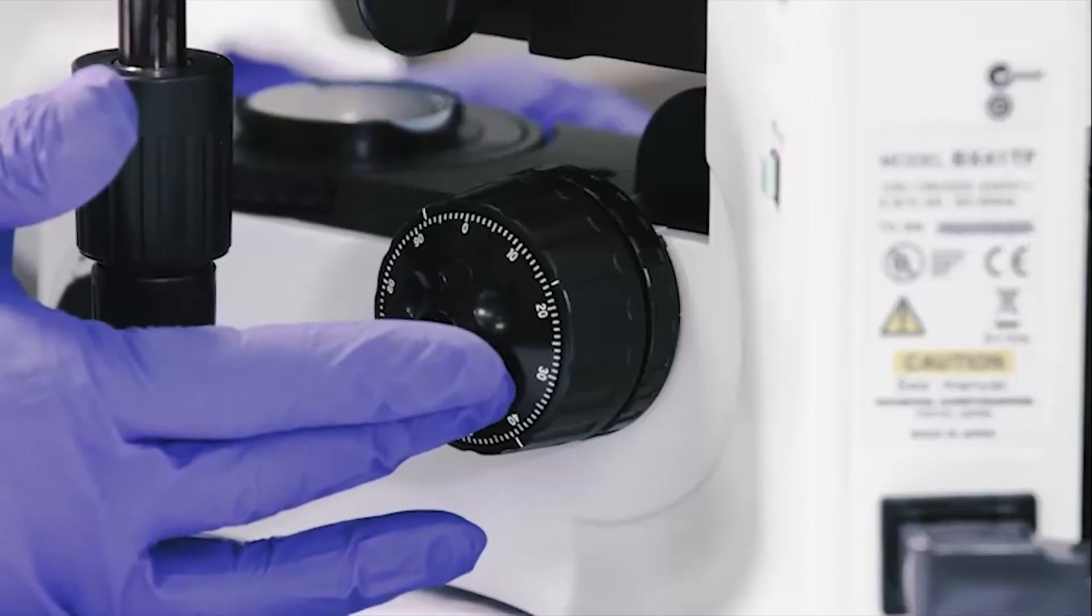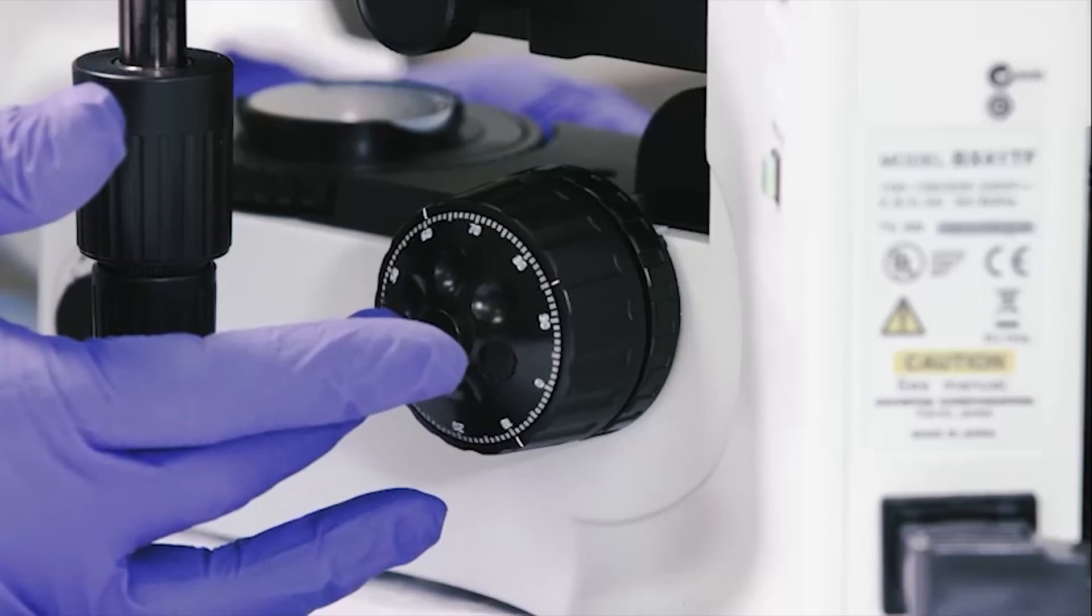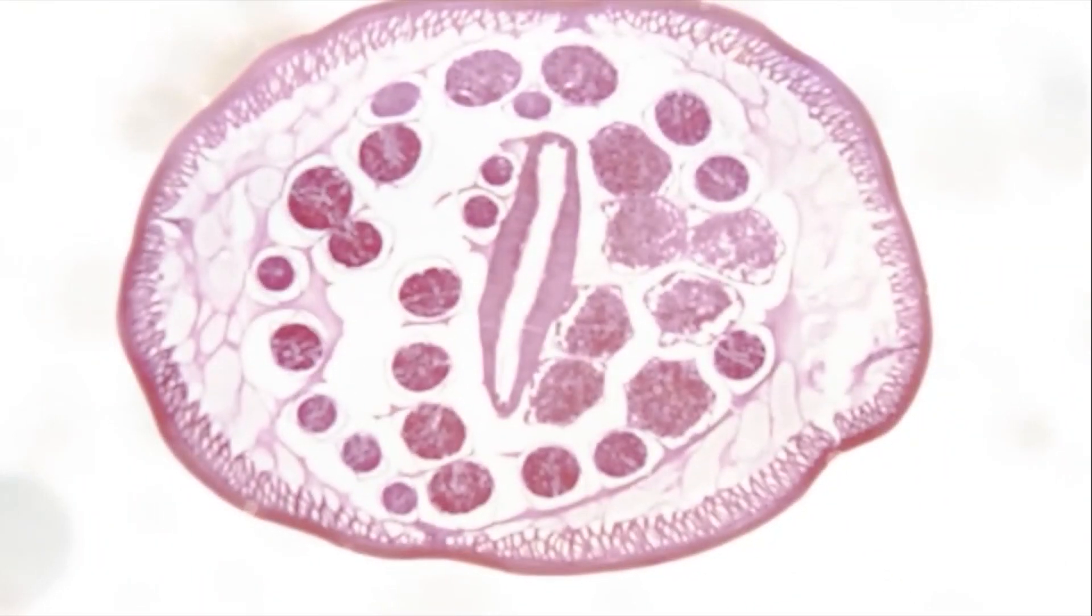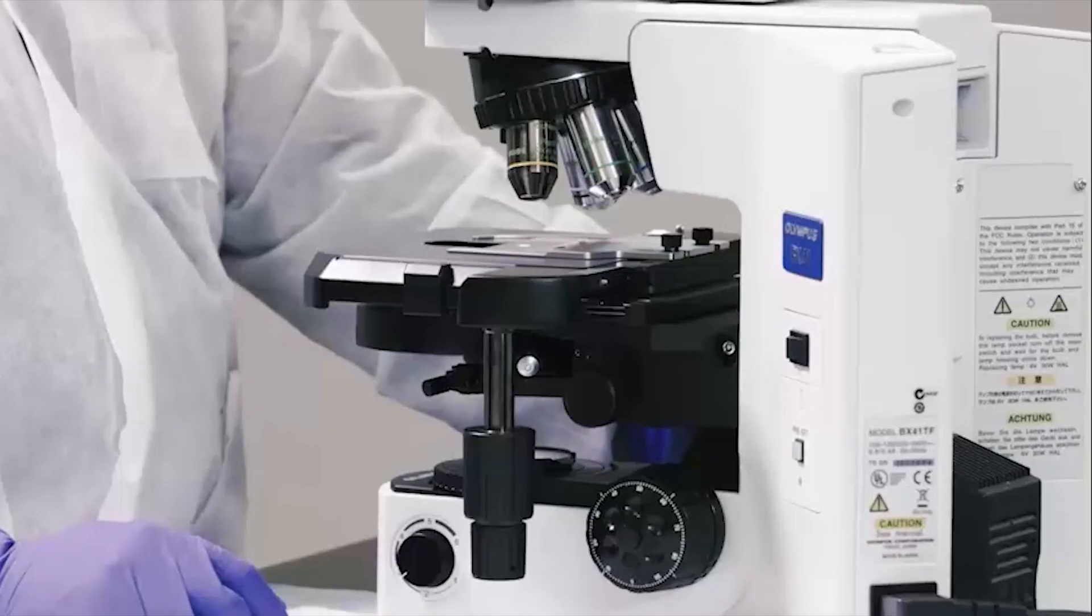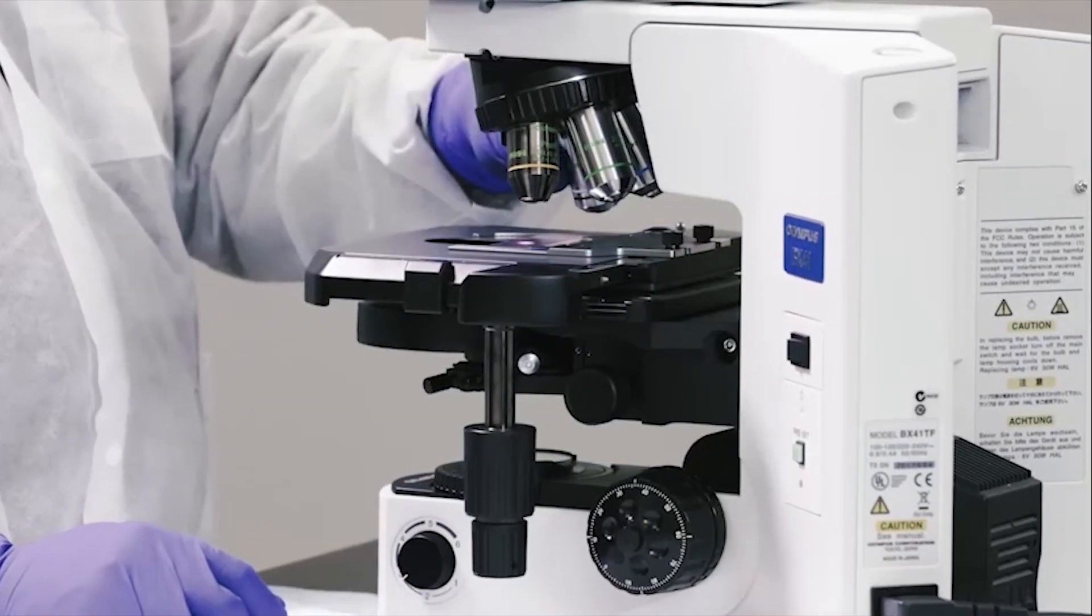The fine adjustment knob is inside the coarse adjustment knob and is manipulated to bring the object on the slide into sharper focus. This is usually performed under low power.